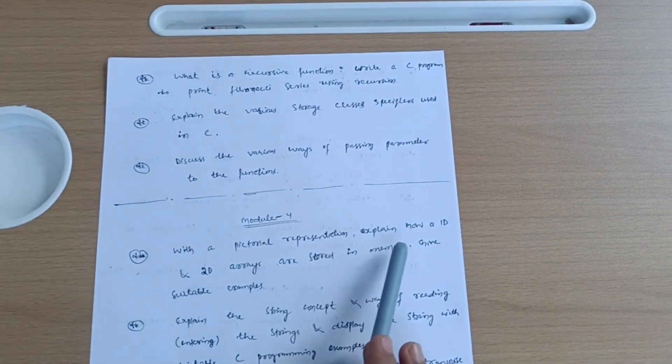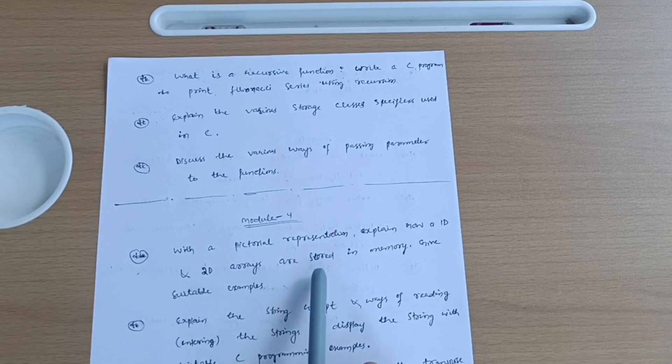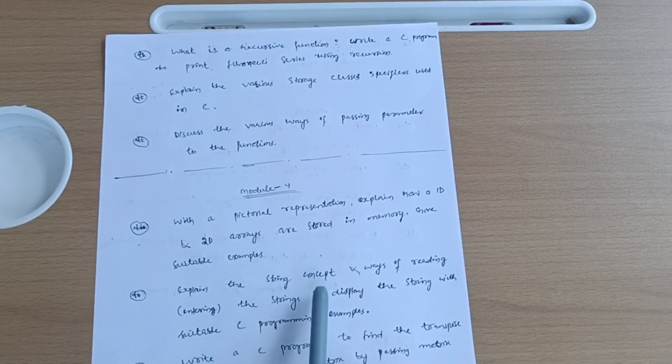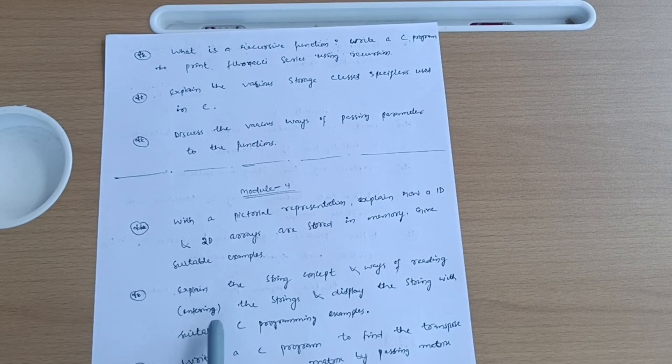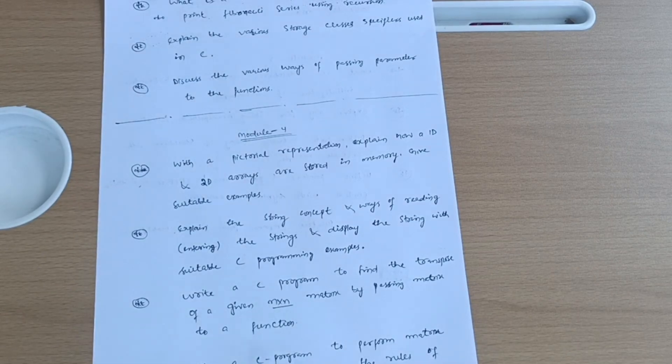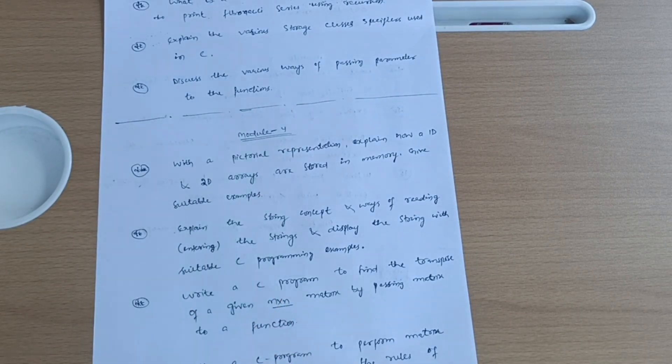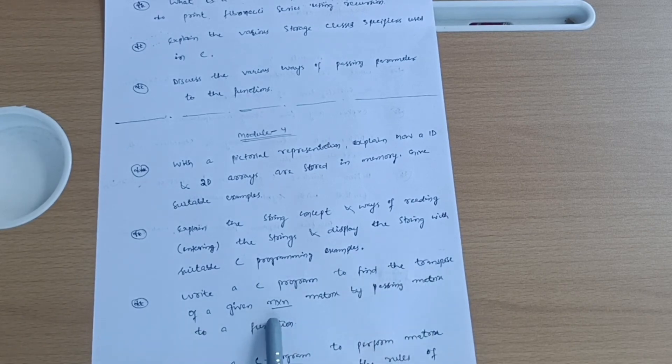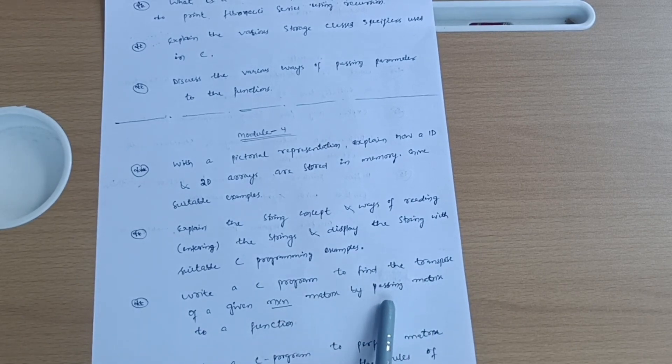Next is module four, in which you have to cover: with a pictorial representation explain how 1D and 2D arrays are stored in memory. Give suitable examples. Explain the string concept and ways of reading or sometimes entering the strings and display the string with suitable C programming examples. Here we have another possibility of programs. As in module 4 you will find lot of programs.